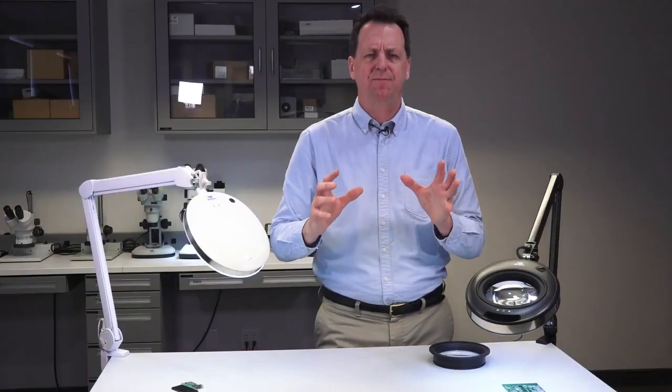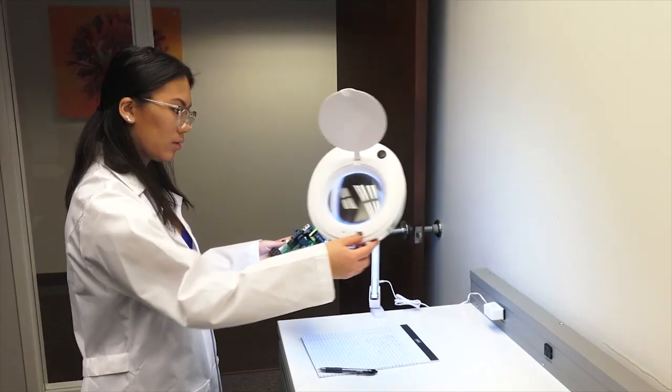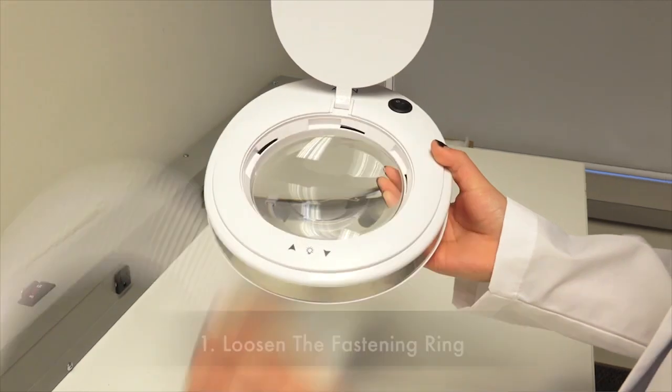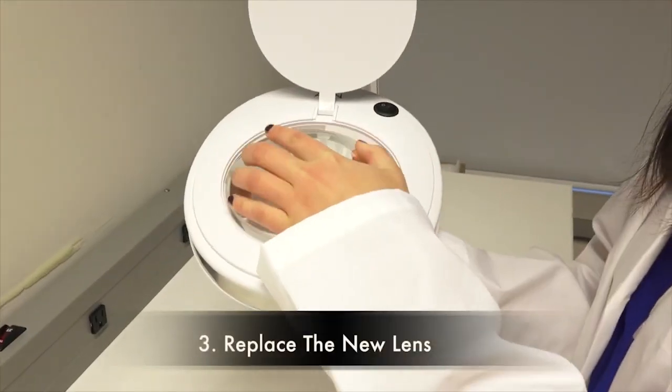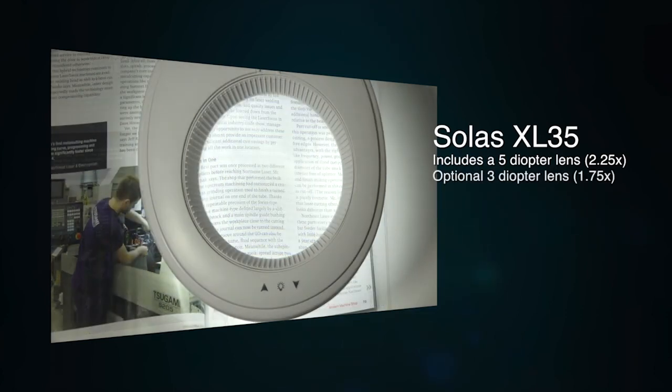And the third one in that family of ProView is the Solus. The ProView Solus is offered in 5 and 8 diopter and it has interchangeable lenses. The ProView Solus model XL35 comes with a 5 diopter lens but can also be interchangeable with a 3 diopter lens which is a 1.75x lens.